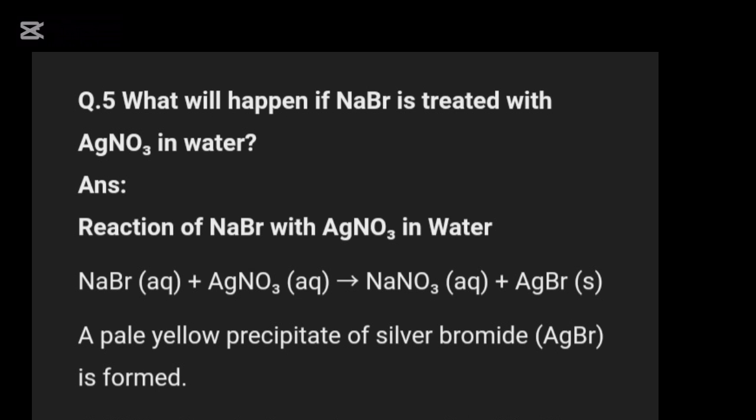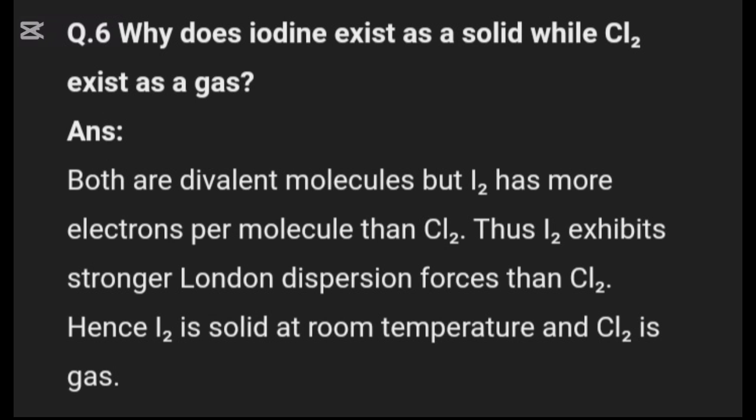Question five: what will happen if sodium bromide is treated with silver nitrate in water? When sodium bromide reacts with silver nitrate, it forms sodium nitrate and silver bromide. A pale yellow precipitate of silver bromide is formed.